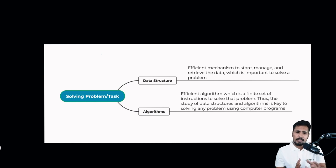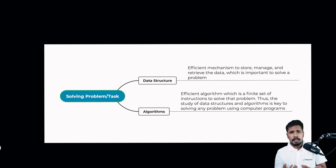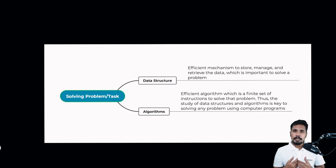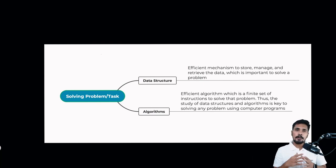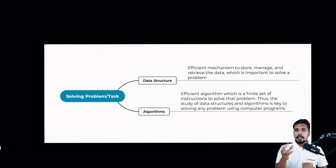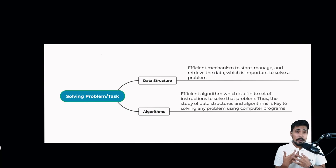In lectures one and two we discussed what data structures and algorithms are. From today, before going into different types of algorithms, we are first learning about data structures — how to store, manage, and retrieve data, and the different types. We'll cover data structures for a couple of lectures, then go deep into different types of algorithms. Today we focus on linked lists, types of linked lists, insertion, and deletion.